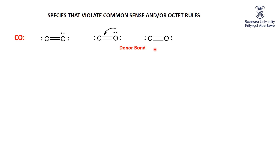Do they care? No. Because when you count up the electrons, carbon has two, four, six, eight — and oxygen has two, four, six, eight. They're happy. They didn't get happy sensibly, but they're happy.